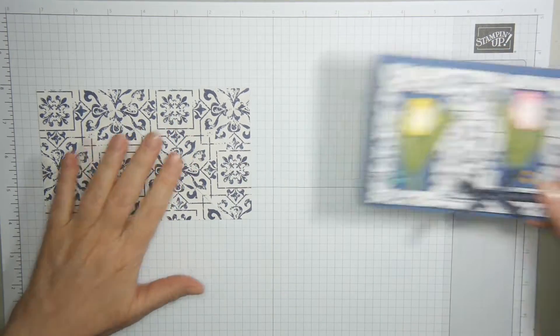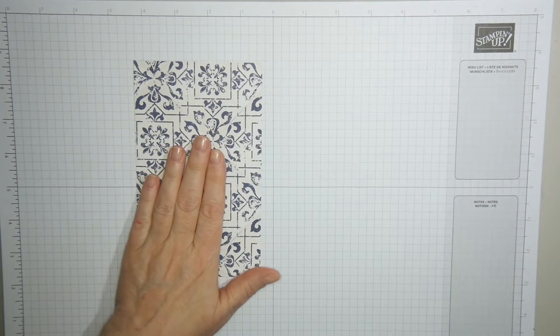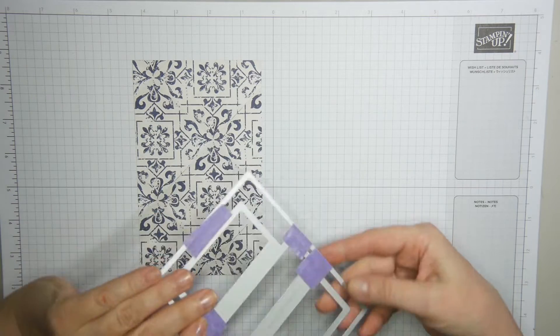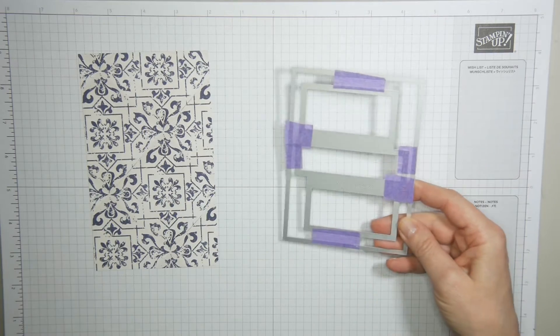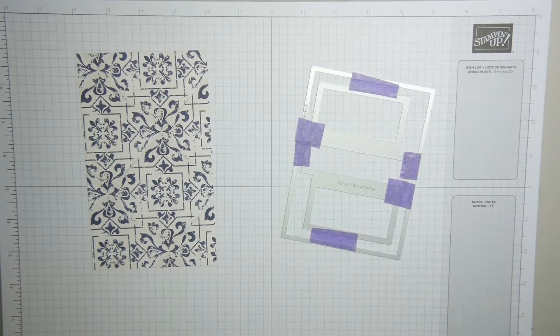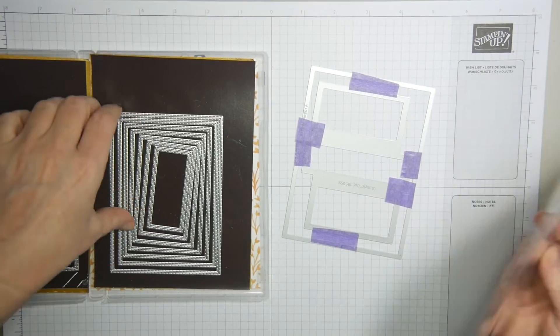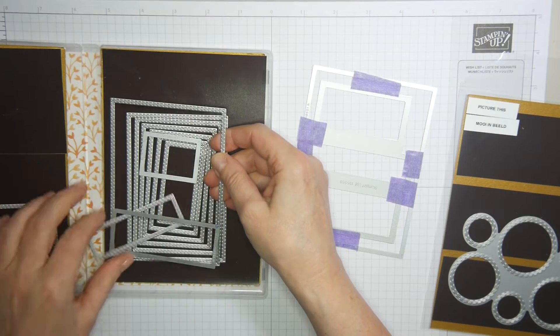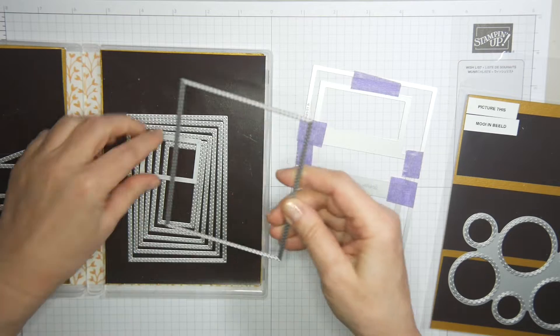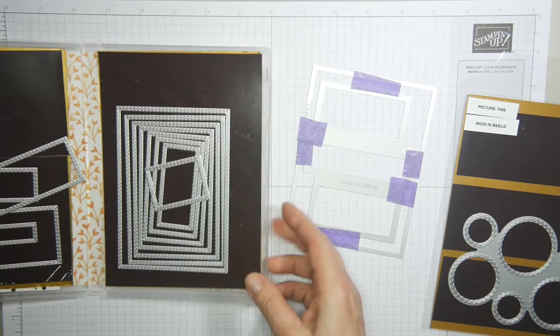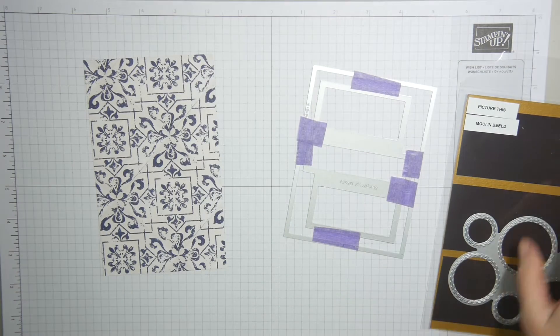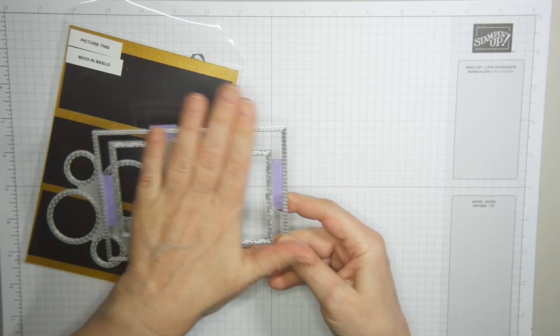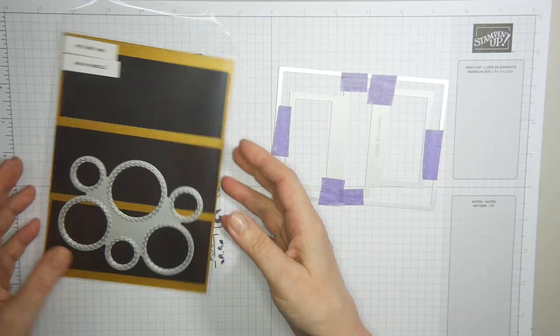Now if you take your designer series paper and cut a four inch strip, that's just going to fit on the die. I've used two dies - the largest of the stitched rectangles, and then from another die set Picture This, there's one with these rectangles as well. You see I have stuck them together with some tape temporarily.